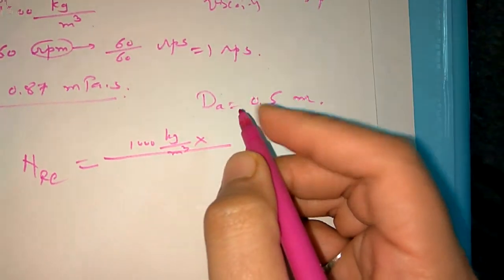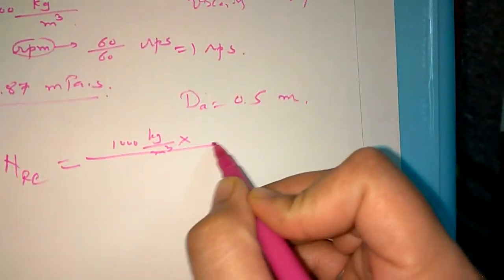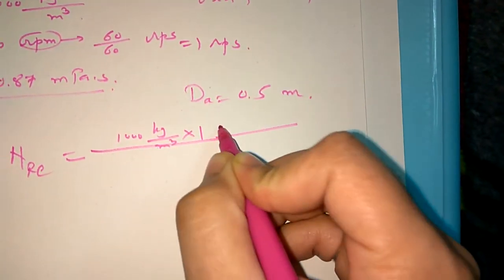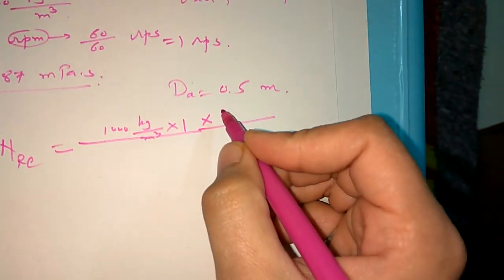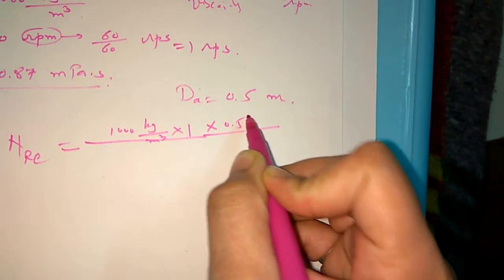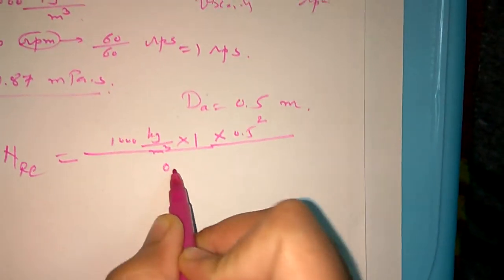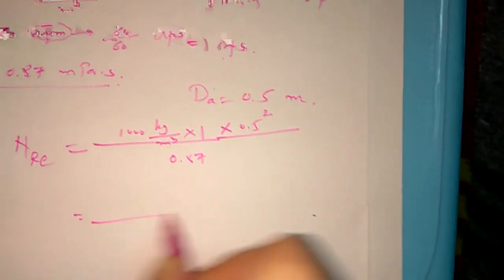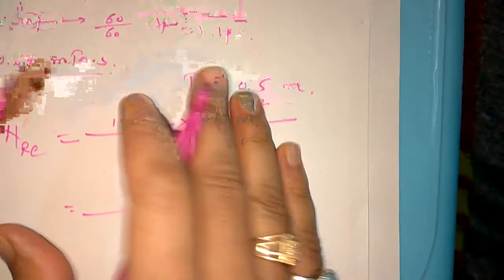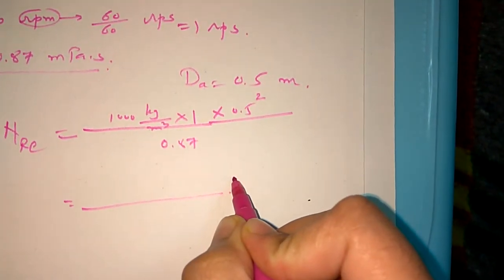Now rho is equal to 1000 kilograms per meter cubed, then the RPS is equal to 1, into diameter of agitator and the square of that, so 0.5 squared.